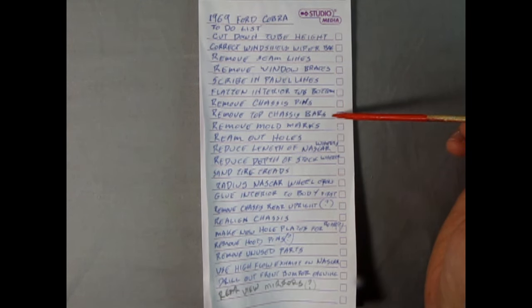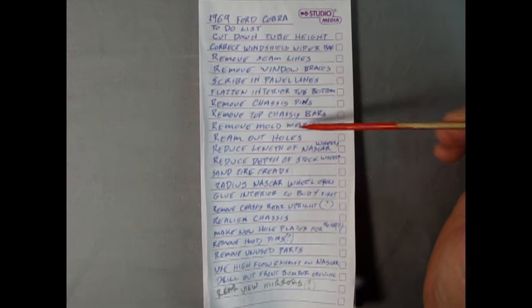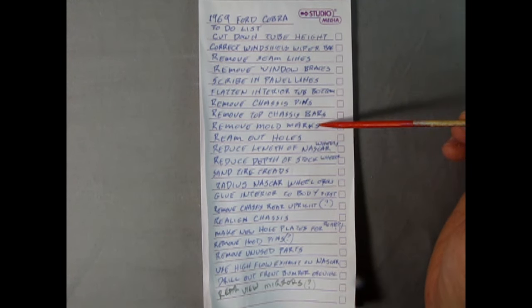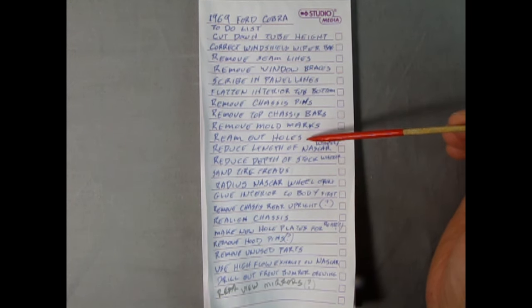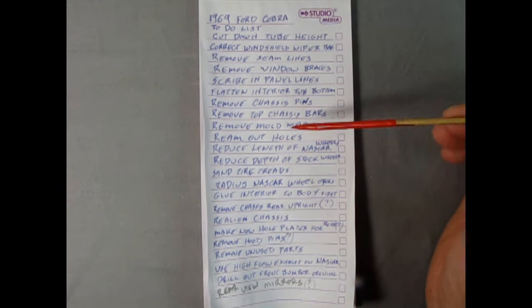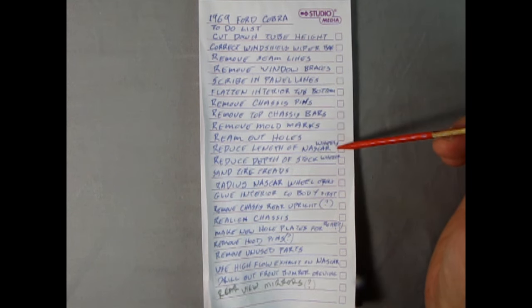Going to totally get rid of it and glue it in as if none of that existed in the first place. Remove the top chassis bars. Now that was what Trekworks had recommended. Remove mold marks. That's going to be everywhere. Ream out holes. So this would be for any of the holes involved with the wheels, just to make sure that everything's going to roll nicely underneath there.